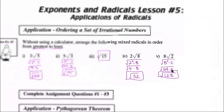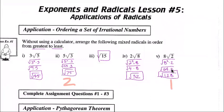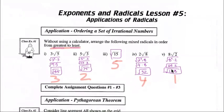Now, looking at these, they all have the same root, so which one gives us the biggest number? Square root 128, of course. Next is square root 75, then square root 45, then square root 32, and finally square root 15. So we can rank irrational numbers from greatest to least or least to greatest depending on the question.